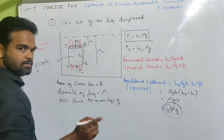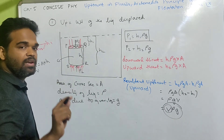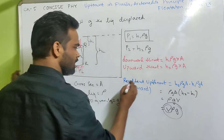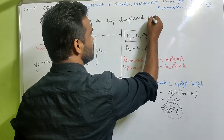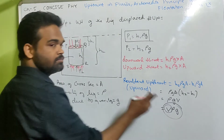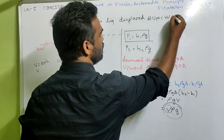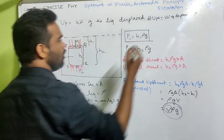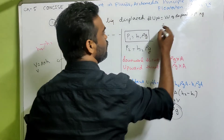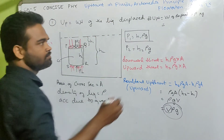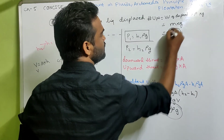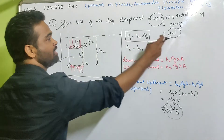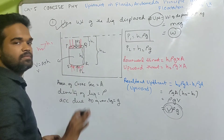That gives us uptrust = rho·G·V, i.e., V·rho·G. If V is the volume of the cylinder (the body), then V is also the volume of the liquid displaced by the solid, which is completely immersed in this case. So, uptrust equals volume of displaced liquid into density of the liquid into G. Volume of displaced liquid into rho (density) gives the mass, and mass into G is weight. Therefore, uptrust is equal to the weight of the liquid displaced by the submerged part of the body.